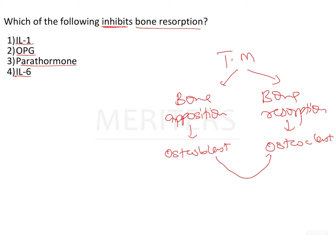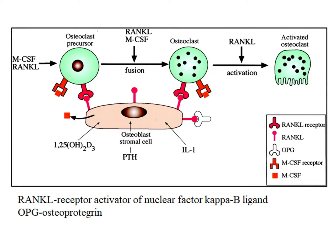There is an interaction seen between the osteoblast and osteoclast cells. The osteoclast precursor cells have a receptor on their surface known as the RANK receptor — the receptor activator of nuclear factor kappa B.